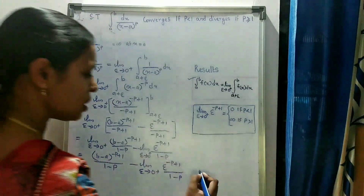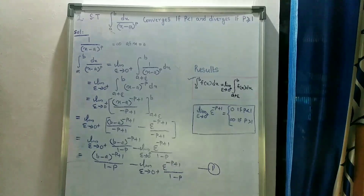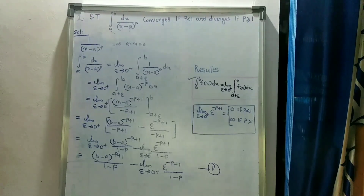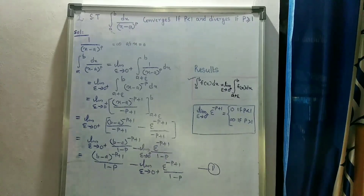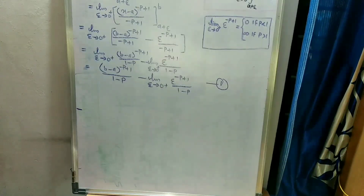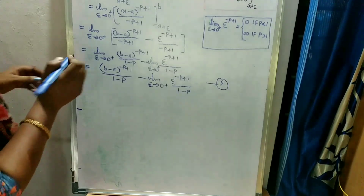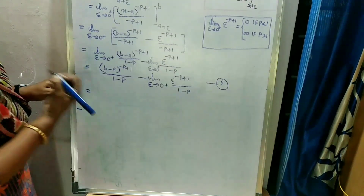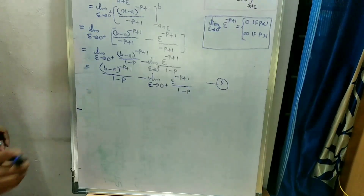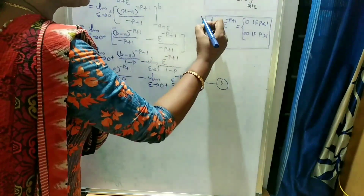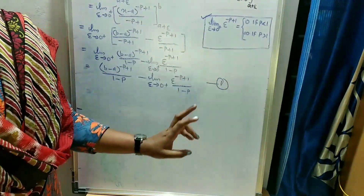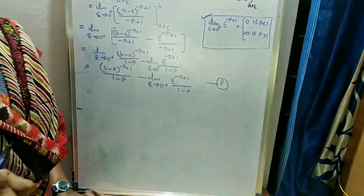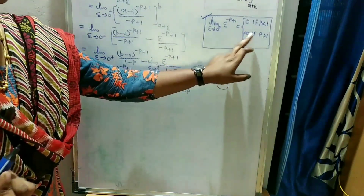We note the key result, equation number 2: the limit as epsilon tends to 0 plus of epsilon^(minus p plus 1) equals 0 if p less than 1, and equals infinity if p greater than 1.